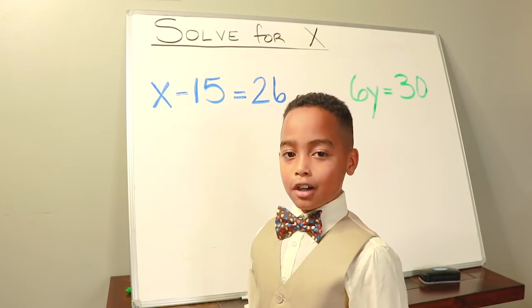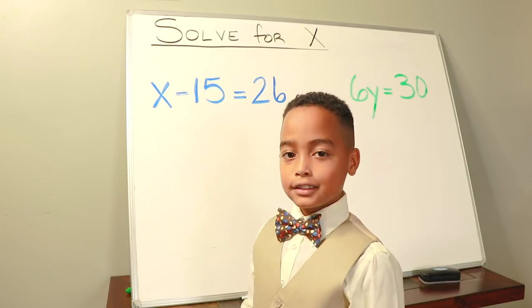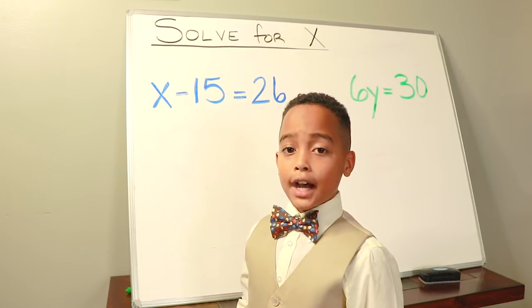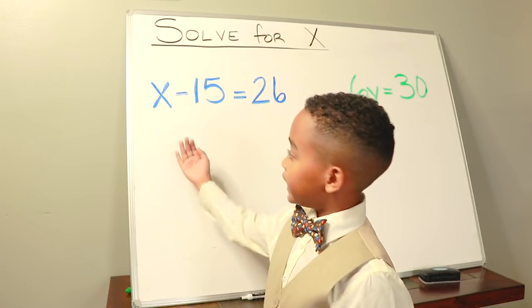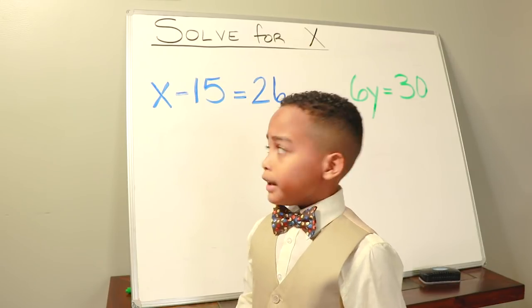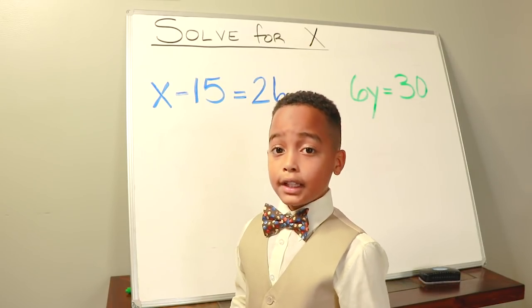What's up, today we're gonna be talking about solving for x. The first step is to isolate the variable, which is x, the placeholder for the unknown number. Now it's not always going to be x, it can be any letter.